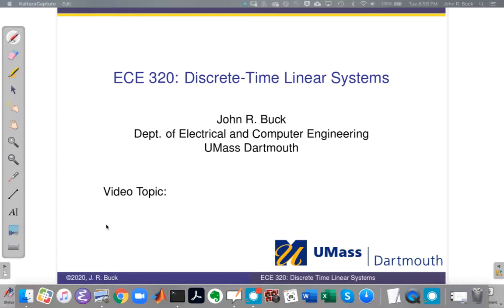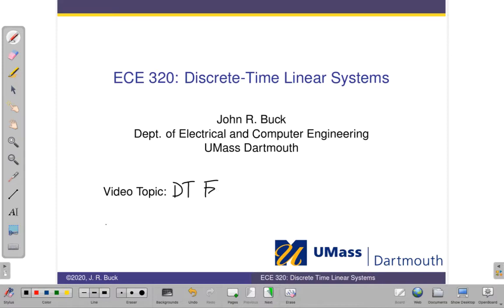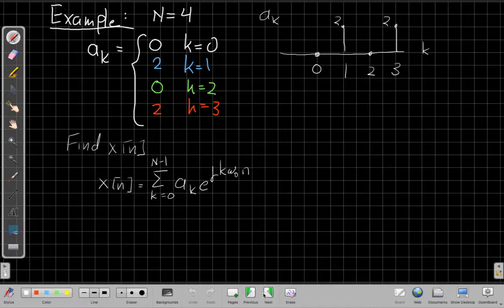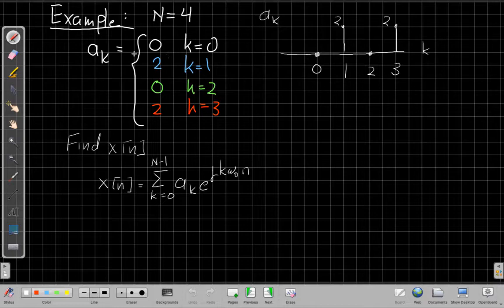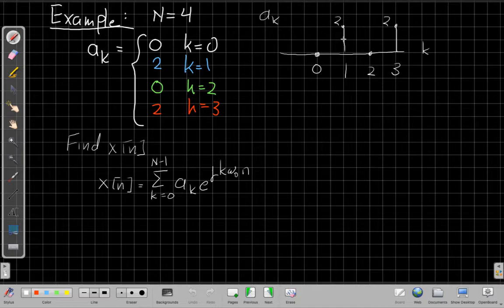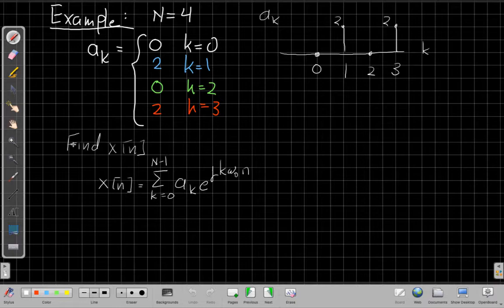So let me switch over to the whiteboard. Our topic for today is the discrete time Fourier series example, showing how we take the coefficients and get to the time signal. In this example, we're going to look at a case where the period N is 4. And then the values of the Fourier series coefficients are 0 when k equals 0, 2 when k equals 1, 0 when k is 2, and 2 again when k equals 3. And I've written them in color because I'm going to use the color to show where things get plugged in, which helps people see where the substitutions all happen.